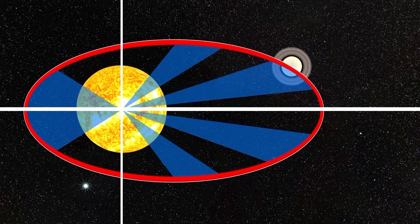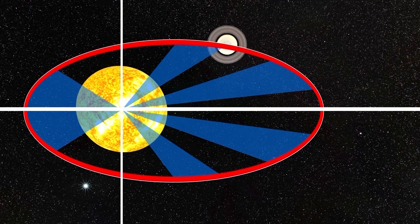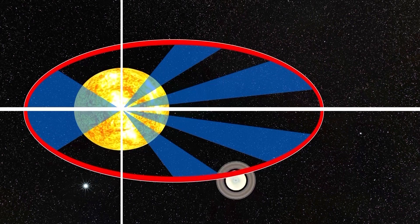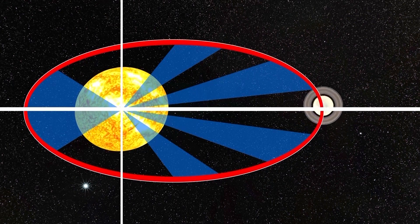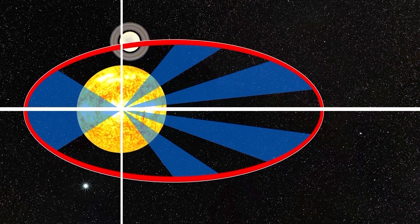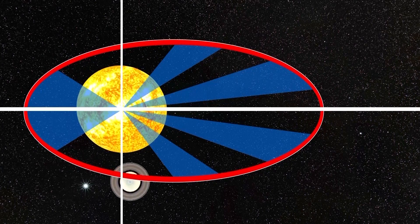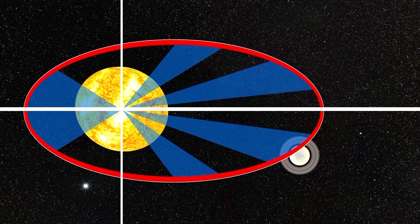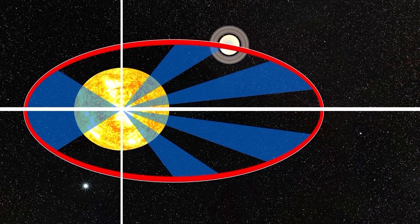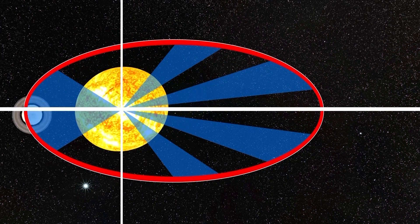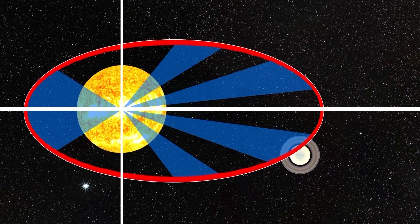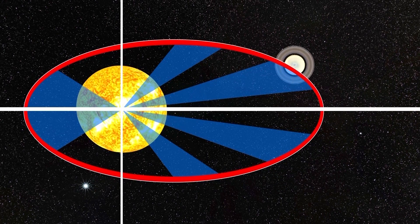The second law: a line segment joining a planet and the sun sweeps out equal areas during equal intervals of time. Basically, gravity is stronger when two objects are close together and weaker when they're far apart. When a planet is further from the sun, it moves more slowly; when it's close, it moves quicker. The second law just explains that this ratio is constant — the further the distance, the slower its orbit, and vice versa.